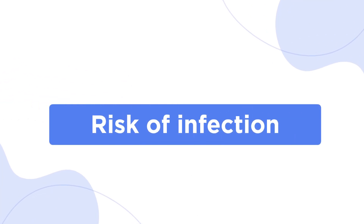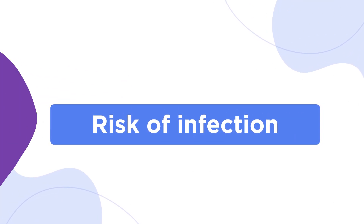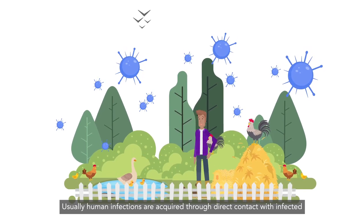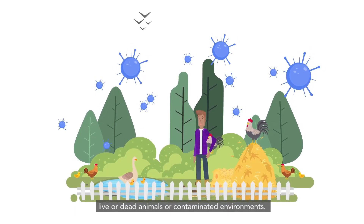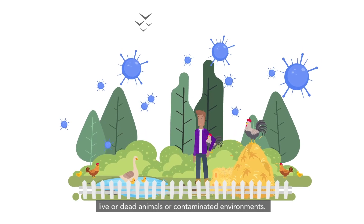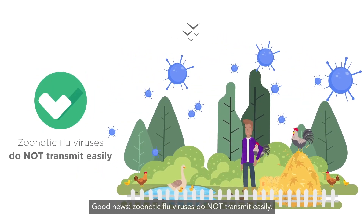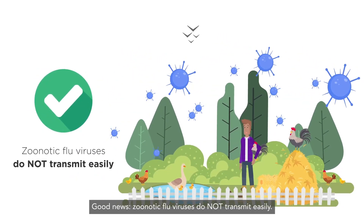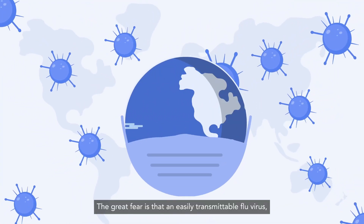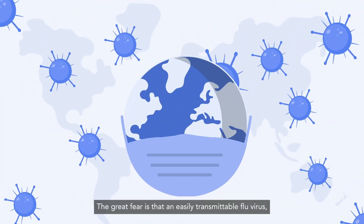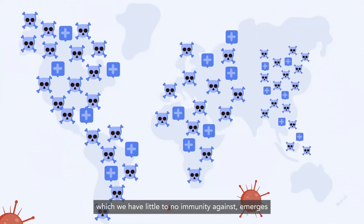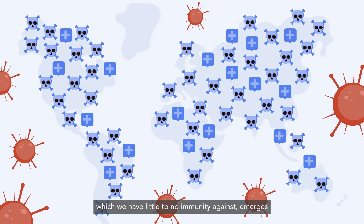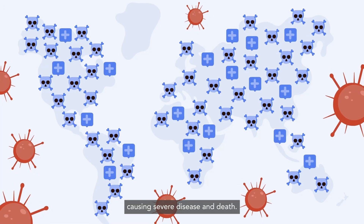Risk of infection: usually human infections are acquired through direct contact with infected live or dead animals or contaminated environments. Good news — zoonotic flu viruses do not transmit easily. The great fear is that an easily transmittable flu virus, which we have little to no immunity against, emerges, causes severe disease and death.